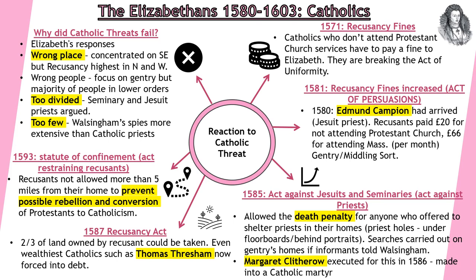So why did these Catholic threats all fail? Firstly, we must credit Elizabeth's responses — she moves away from being moderate and starts becoming much harsher in clamping down on any threat in the country. Second, quite often these priests would target the wrong places — they concentrated on the south east of the country, but actually there were more recusants in the north and west. They also targeted the wrong people, focusing on the gentry, but the majority of people were in the lower orders of society. Seminary and Jesuit priests wanted different things and often argued. And lastly, there were too few of them — Walsingham had more spies and was therefore able to successfully uncover most of the plots against Elizabeth.